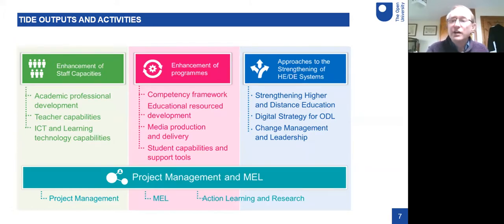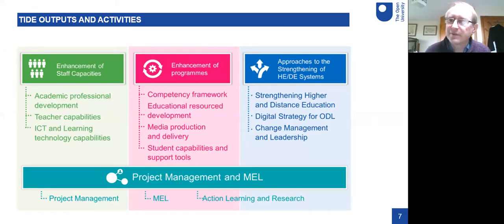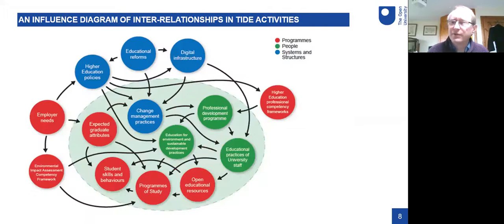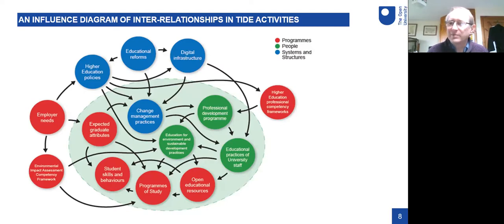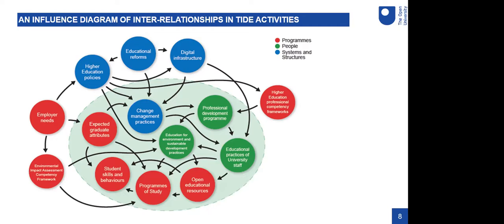The project is about four and a half million pounds sterling and involves over 300 university staff from across those 40 higher education institutions, around three major areas: enhancing staff capacities, enhancement of programs, and strengthening higher education and distance education systems in Myanmar. An influence diagram shows these things are all connected and color-coded for programs, people, systems, and structures. Open educational resources have been a key element — teaching learning design, creative commons licensing, and how to use OERs to create and supplement programs.